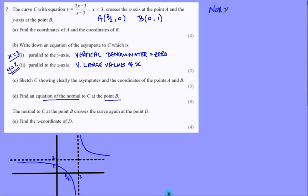I've got a point B, so normal at B. I've got a point, I need my gradient. I need a dy dx, and for that I'm going to use the quotient rule. I've got a quotient here.